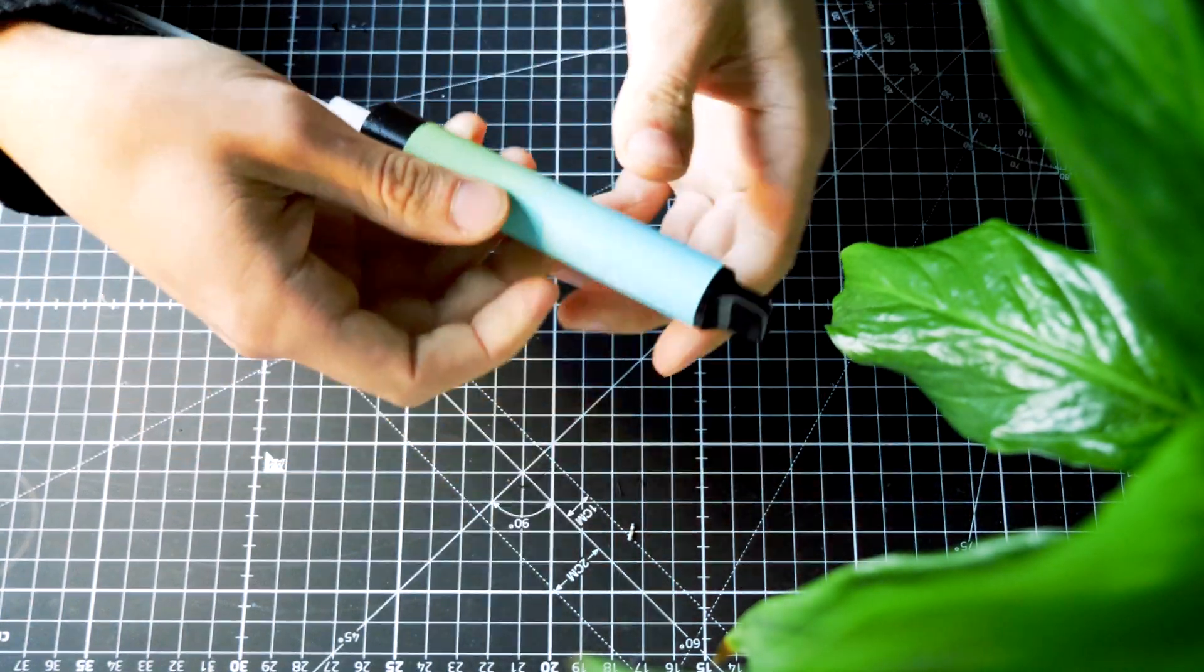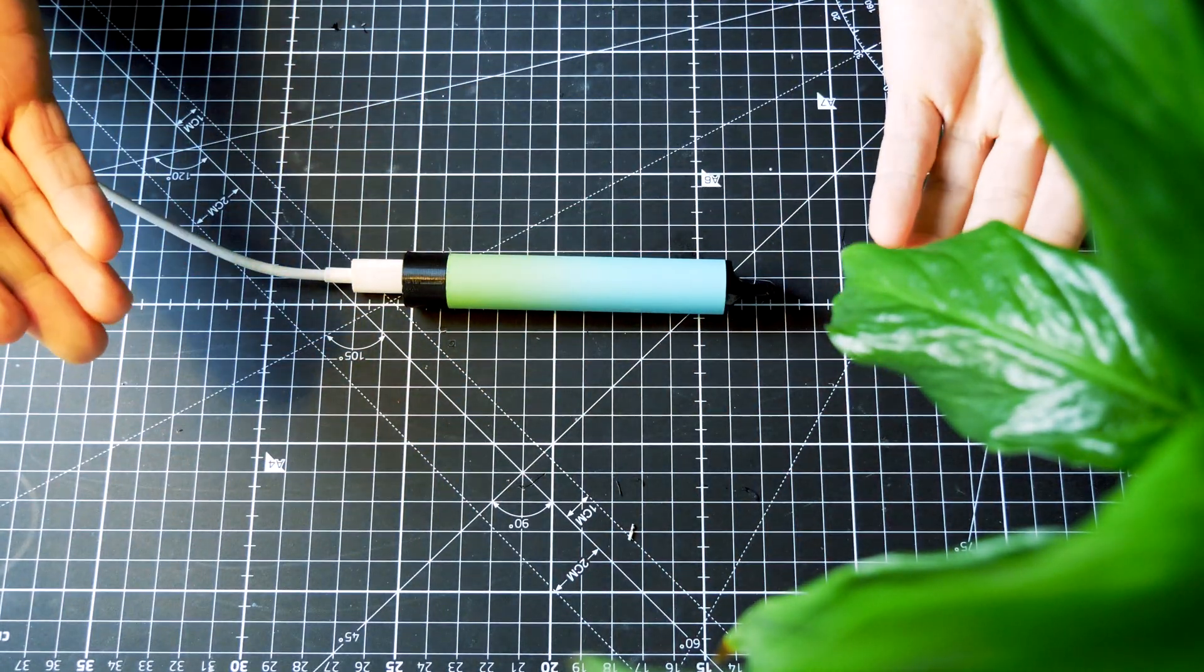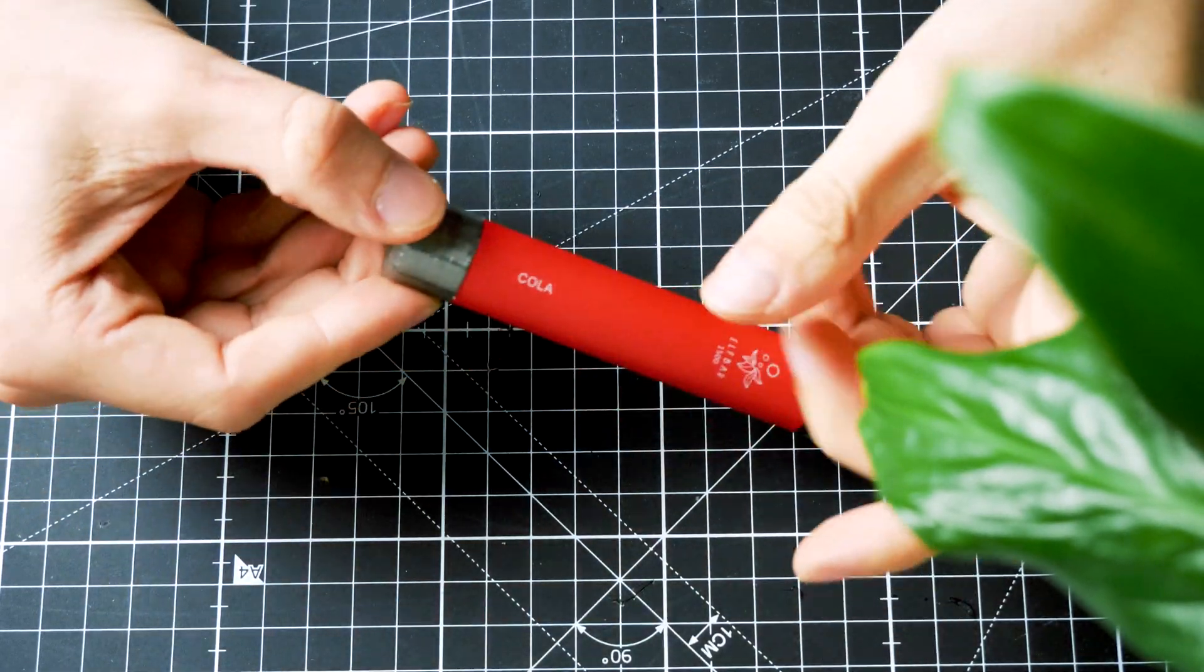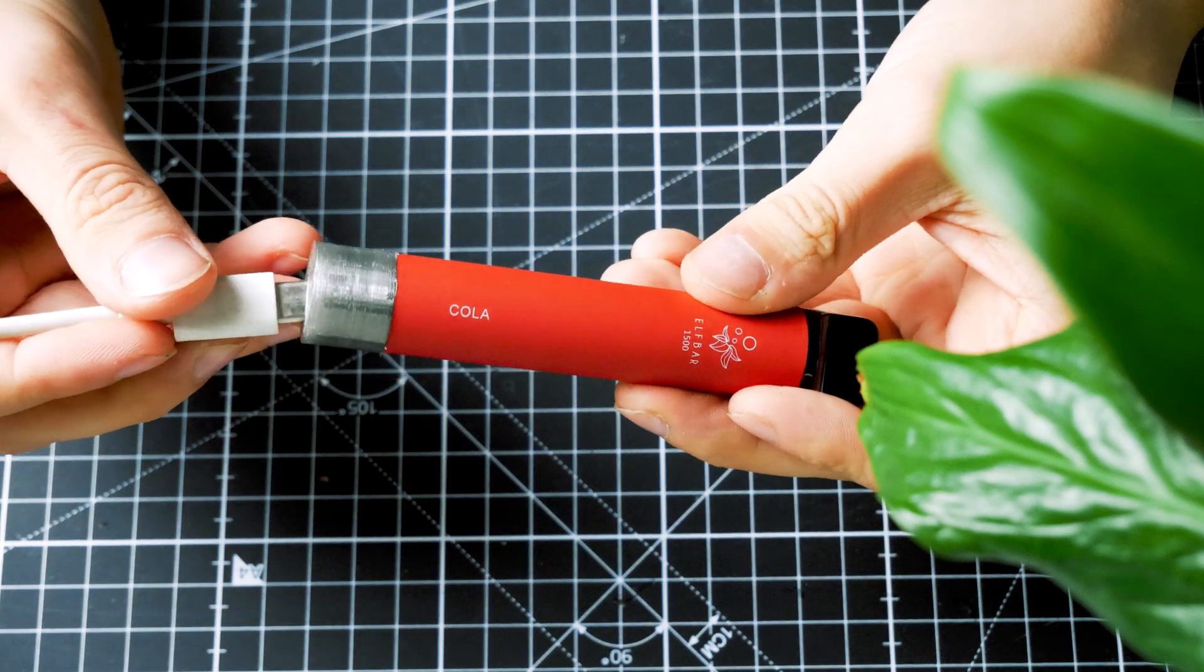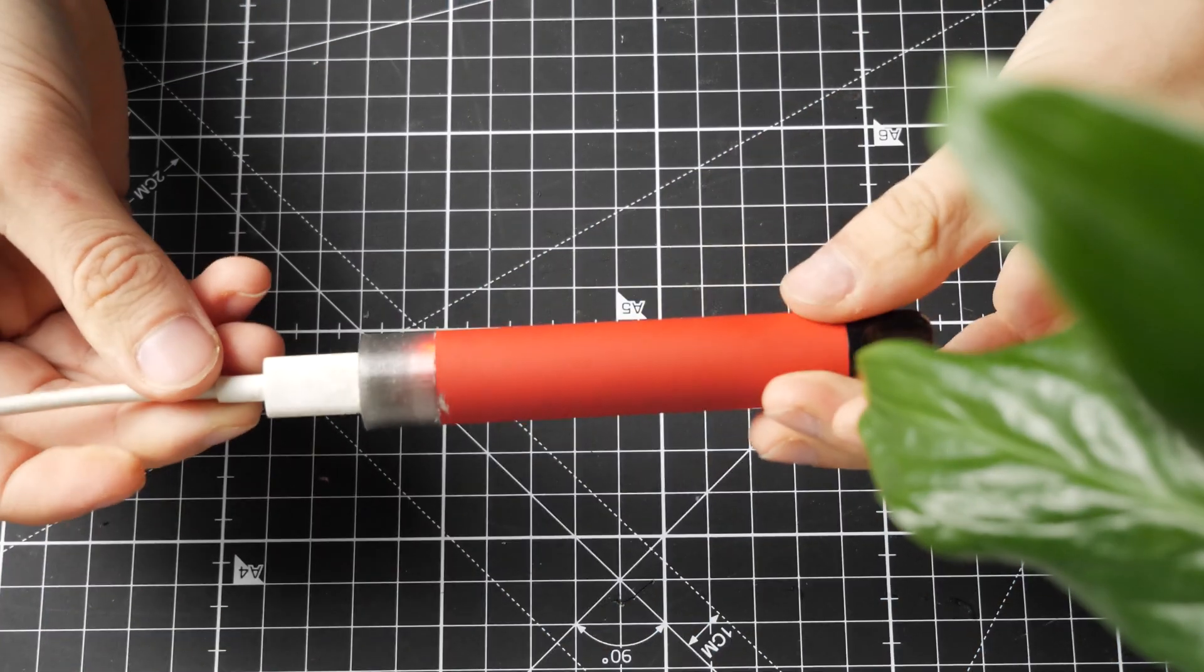Finished. I also made a dark transparent cap to see the charging status and the sensor LED. I hope that you like my work. I will link all the necessary parts in the description, also the 3D files for different vape pens.